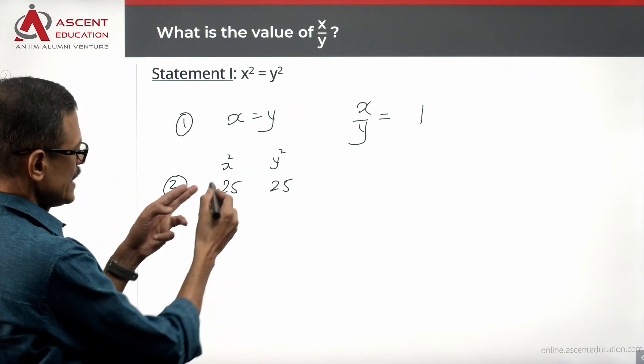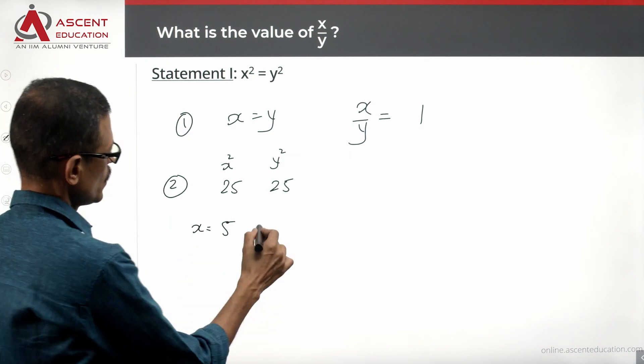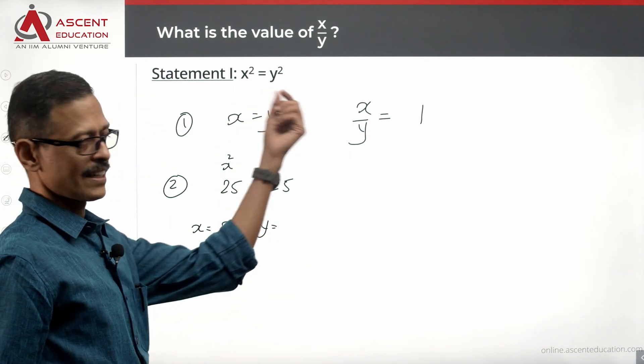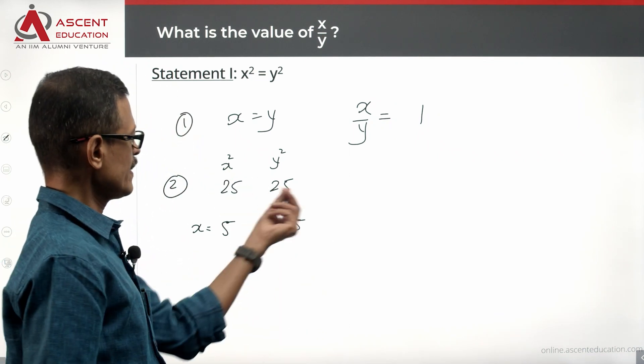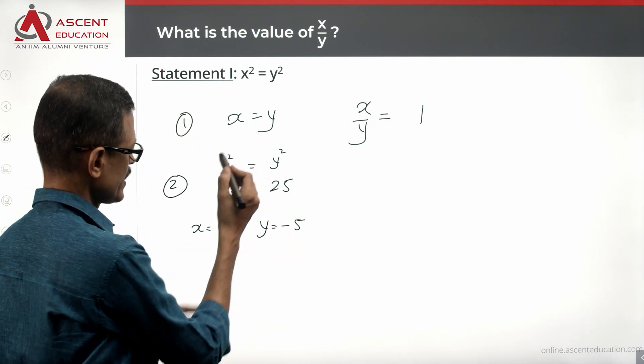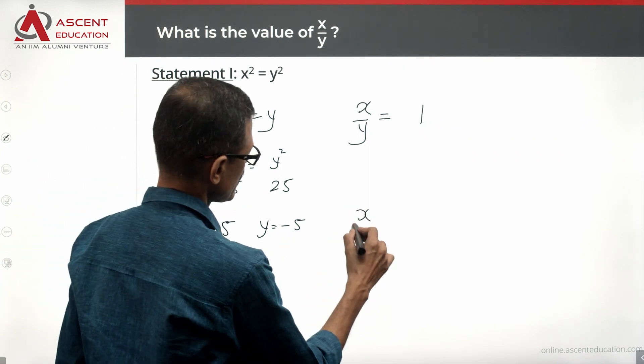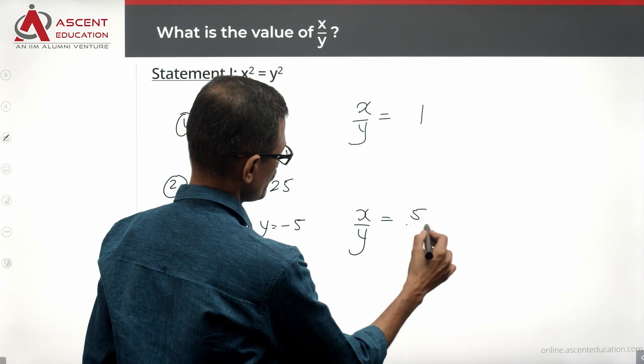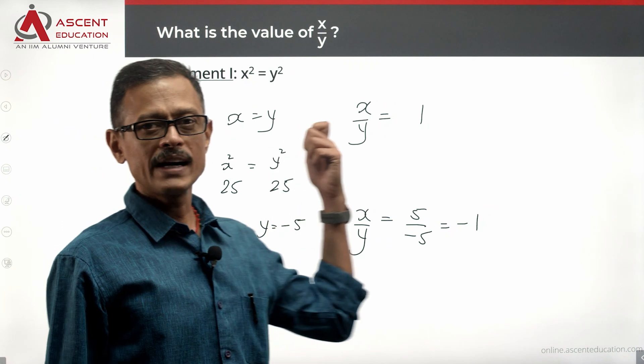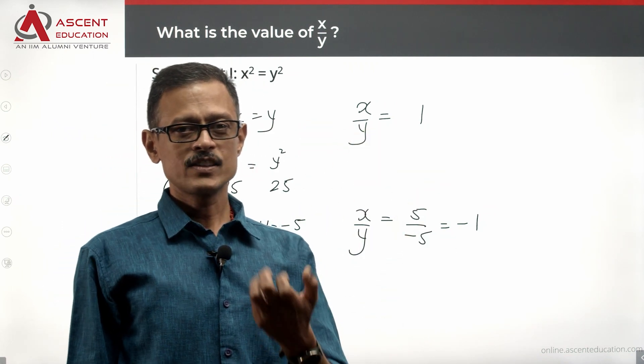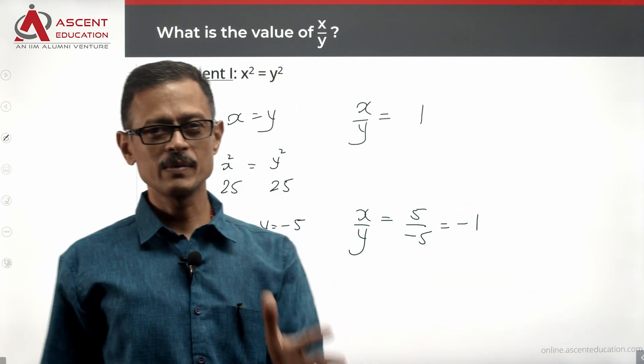y value is 5, which is what we saw here. But y could have very well been minus 5, which squared would have been 25. So is x² equal to y²? Yes. Is x equal to y? No. In this case, x by y value would be 5 by minus 5, which equals minus 1. So if x² equals y², then x by y could have been 1 or could have been minus 1.